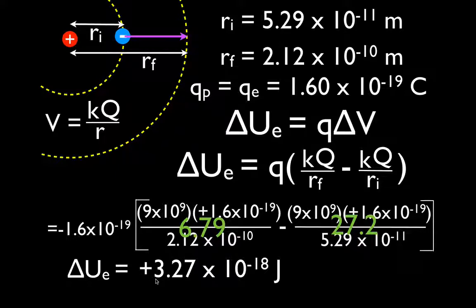This is just like gravitational potential energy in mechanics. When you lift something off the earth, it doesn't want to be off the earth, but lifting it gives it a positive change in potential energy, and you must do positive work. So in this case it's a positive change in potential energy, positive work, and that is the change in potential energy when an electron goes from the first energy level to the second energy level in a hydrogen atom. Thank you very much for watching — if you found that helpful, please give me a thumbs up or leave a comment below, and we'll see you in the next video.